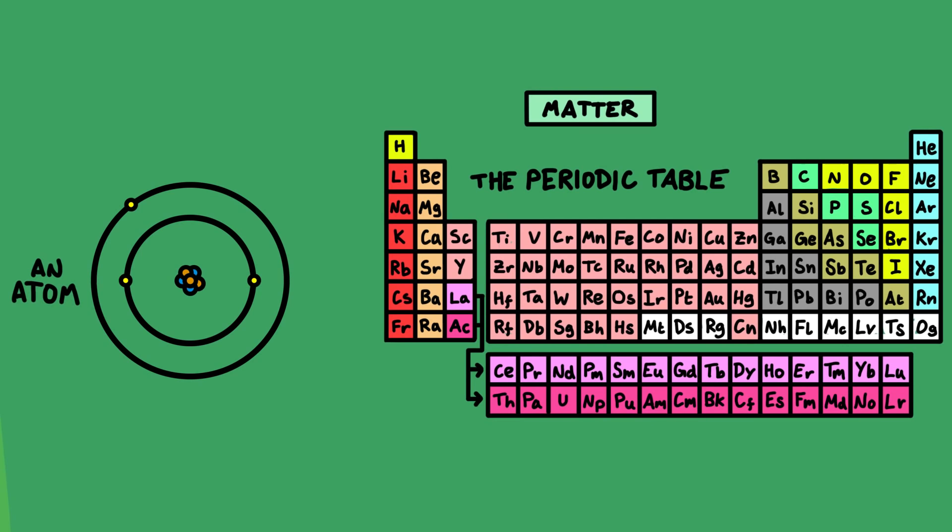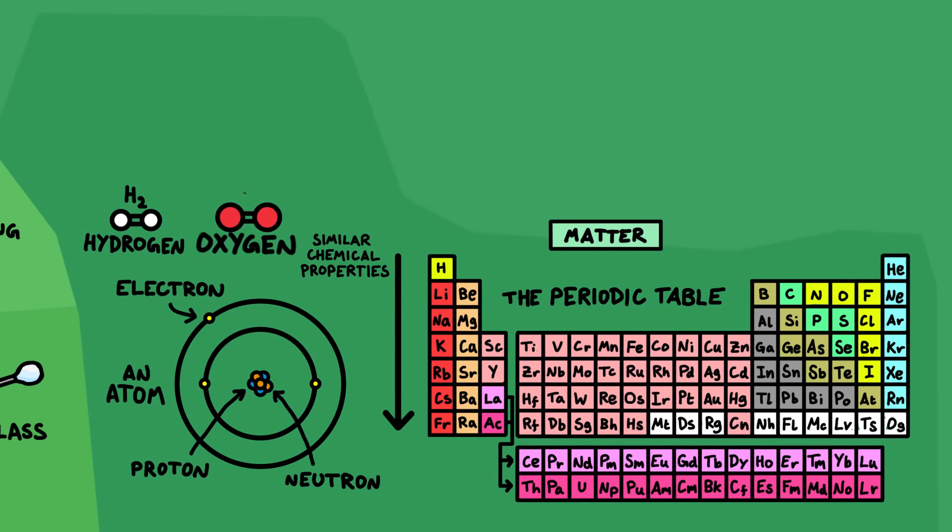Elements in each column have similar chemical properties. Atoms are made of protons and neutrons in the nucleus with electrons surrounding them, and most of chemistry is due to how these electrons behave. By joining together atoms, you get molecules, and different kinds of molecules are called chemical compounds.